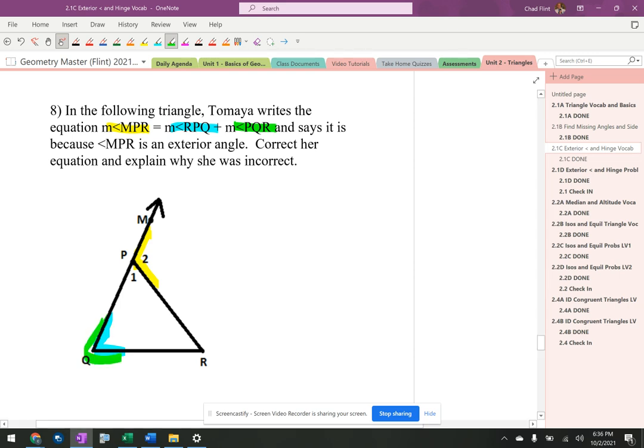That angle is also right there. This is because it's an exterior angle. We need to correct her equation and explain why she was incorrect. Well, she's got the same angle twice.